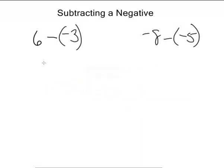So 6 minus negative 3 is really just 6 plus 3. And we should all know what 6 plus 3 is, right? That's 9.